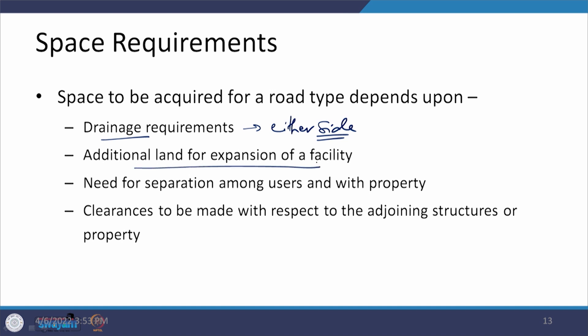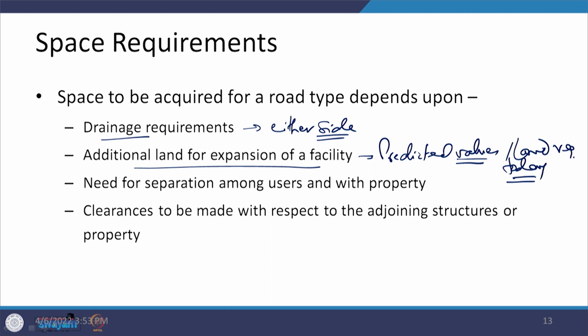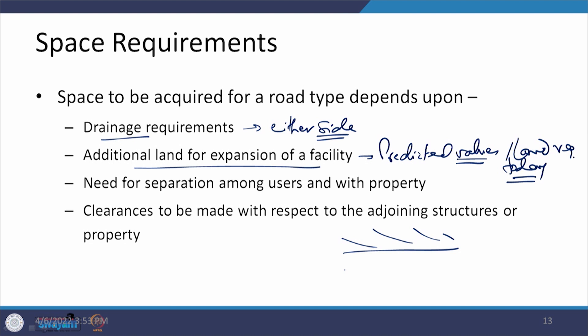Additional land for the expansion of a facility — this is on the basis of the predicted values. The predicted values will tell us whether we need one extra lane or two extra lanes in a particular direction tomorrow, and if that land is not being acquired today it is going to be a problem. So acquisition of land — land requirement is to be looked at today, and whatever is to be acquired, acquire it today only. Clearances need to be made with respect to adjoining structures or property because you cannot have a development and then the road passing right next to it — you need some gap between these two things. This is what we sometimes talk about as a setback.